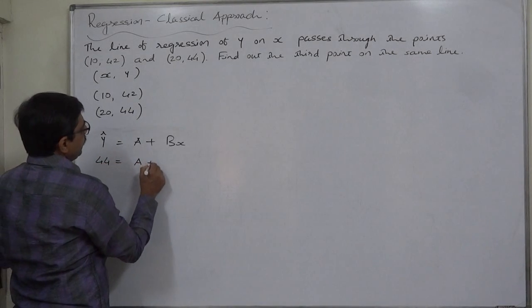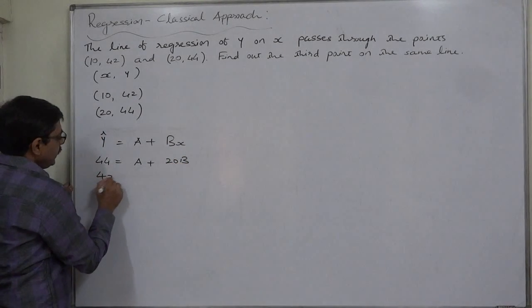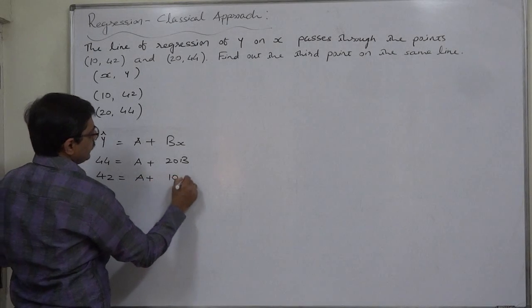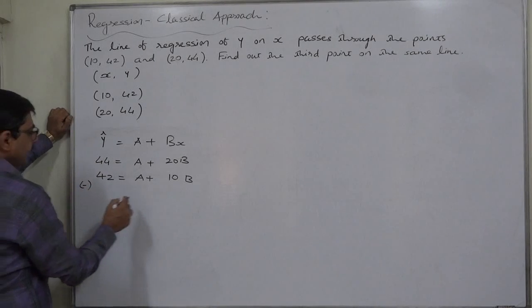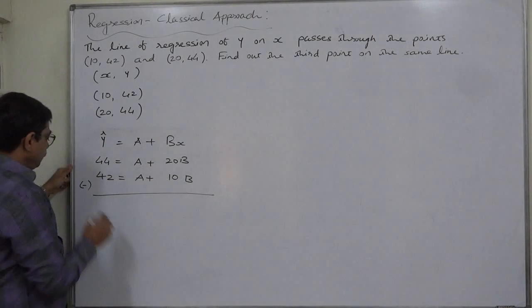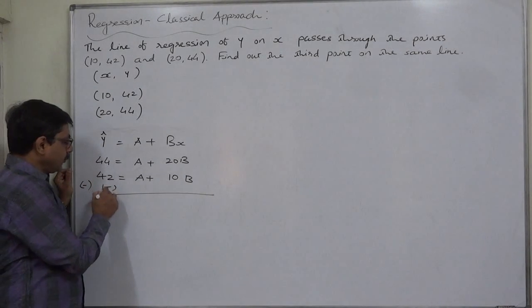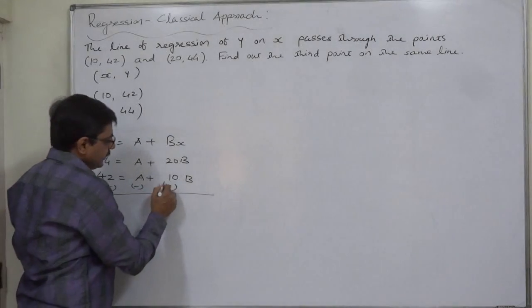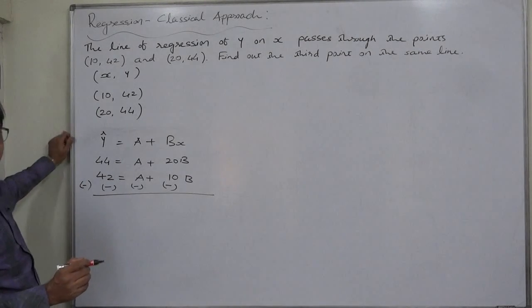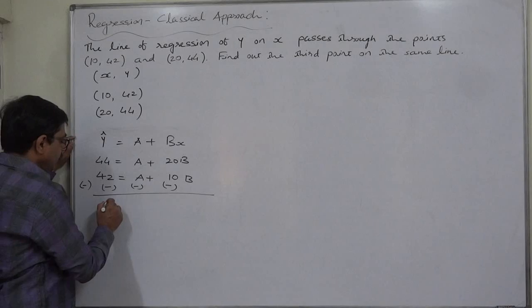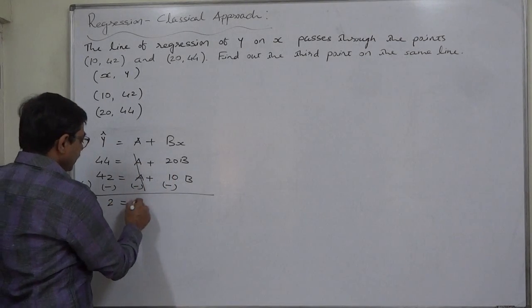44 = a + 20b and 42 = a + 10b. Let's solve it by subtracting the second equation from the first one. Because of this negative sign of subtraction, this 42 will become negative, this a will become negative, and this 10b will become negative because all these three are positive and positive into negative will be negative. 44 minus 42 is 2, positive a negative a cancel, 20b minus 10b is 10b.